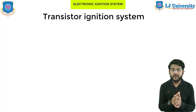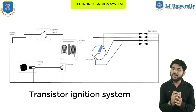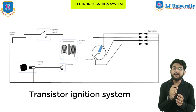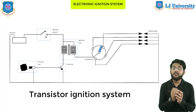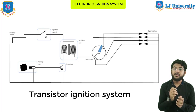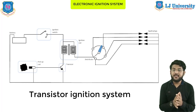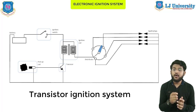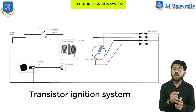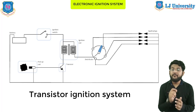The transistor ignition system, as the name implies, uses transistors to replace the breaker point. The breaker point is the mechanism for disconnecting the primary circuit of the ignition coil, as we have already seen in the battery ignition system. Termination of the primary circuit triggers the induction of the ignition coil's secondary circuit. The breaker point works like a normal switch — when the plate is stretched the primary circuit is broken, and when the plate is tight the primary circuit is reconnected.